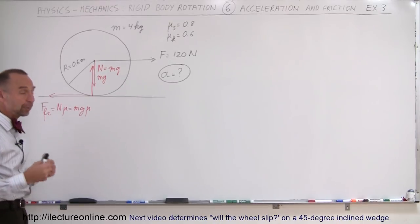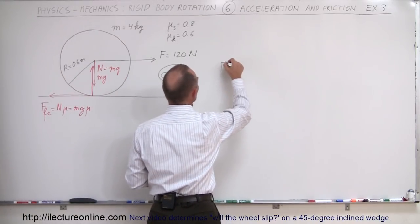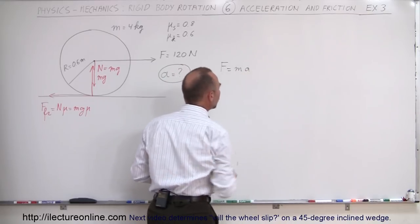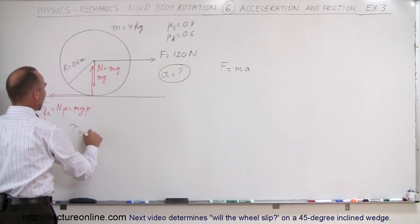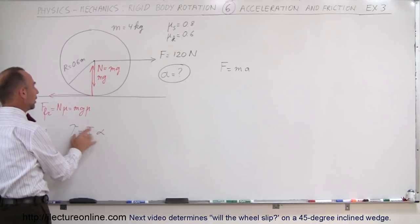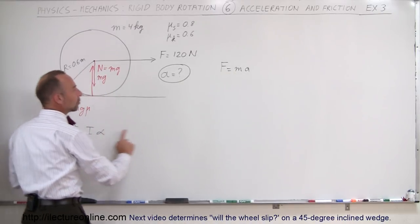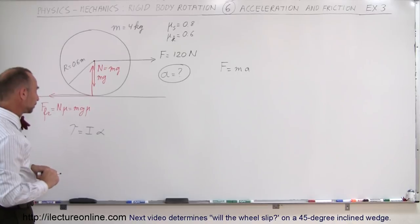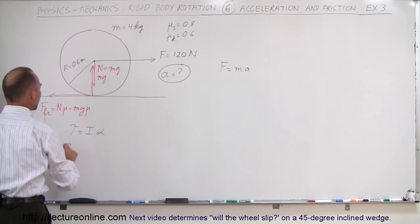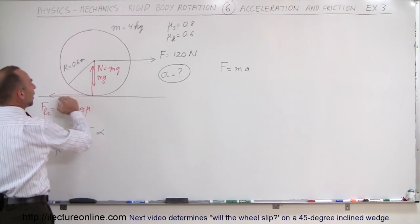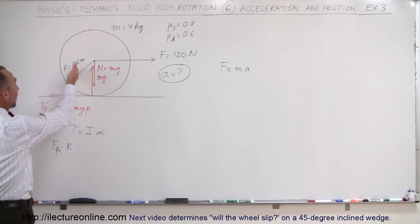The way to figure out whether or not the wheel is going to slip is to write down two equations. First, we have translational acceleration: F = ma using Newton's second law. We can also write the rotational equivalent: torque equals I times alpha. The torque provided by the friction force equals the friction force times the radius of the wheel, and we put the radius at 0.6 meters.